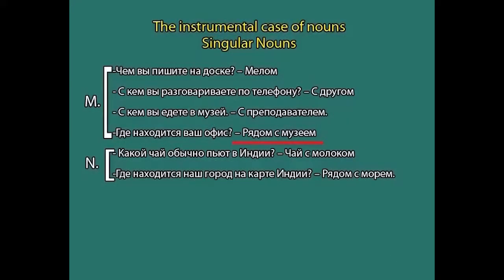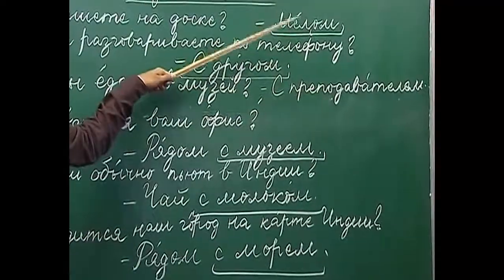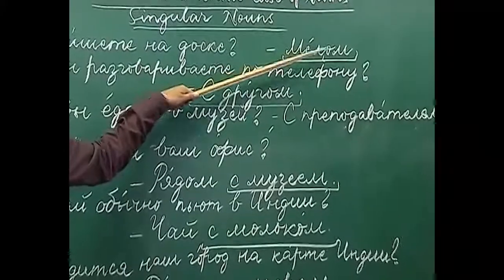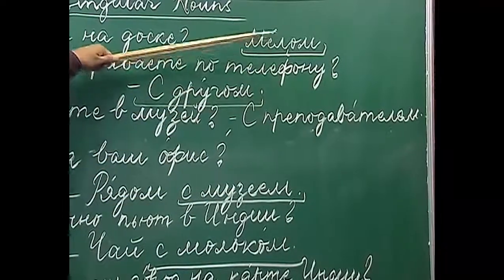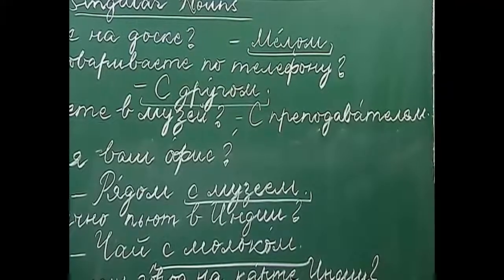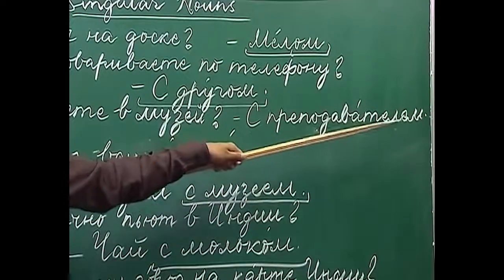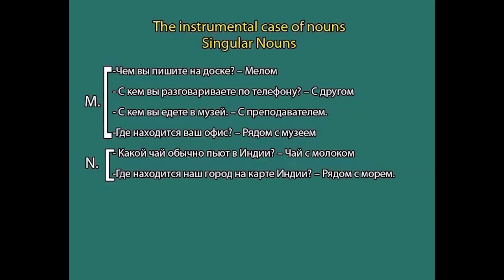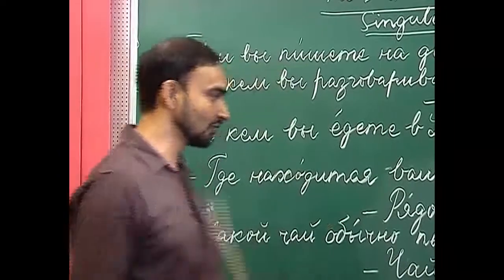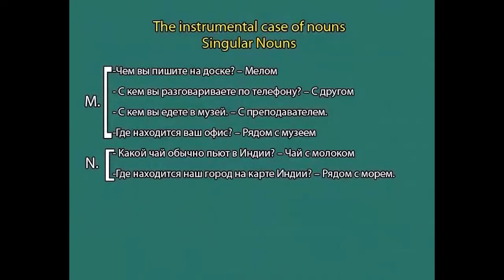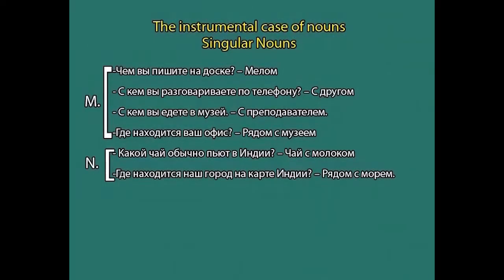So these were the masculine nouns. There were two types of endings: hard endings like мел and друг, and soft endings like преподаватель and музей. For the first two nouns we used the suffix -ом, and for the other two we used the suffix -ем. So the instrumental case form of masculine nouns is formed by using either -ом or -ем. Now let us move on to the neuter gender nouns and how they decline in the instrumental case.